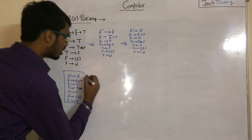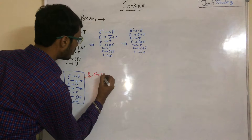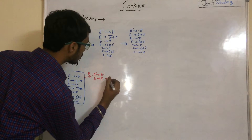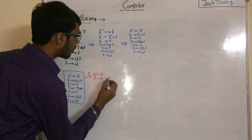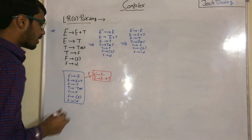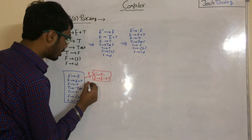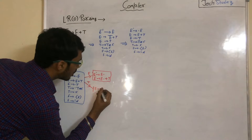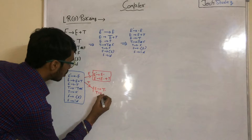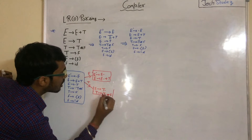Now apply GOTO moves. With E we get: E' to E· and E to E·plus T. After the dot we get the plus symbol, which is a terminal. With T we get: E to T· and T to T·star F — after the dot we get star, which is also a terminal.